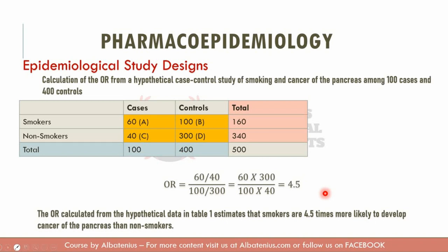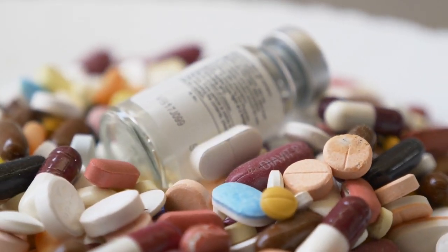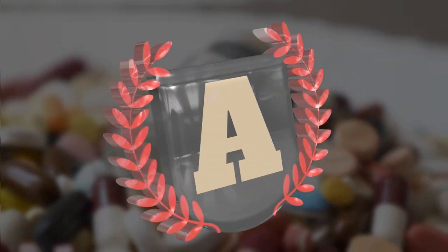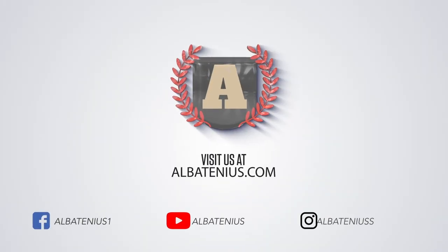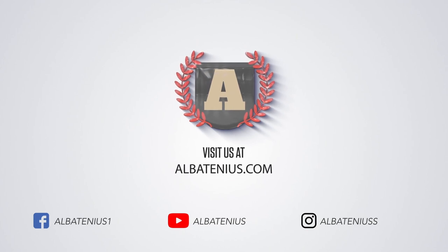In other terms, patients who have been exposed to smoking have higher chances of developing pancreatic cancer, or conversely, patients who have pancreatic cancer are more likely to have been exposed to smoking compared to patients who don't have pancreatic cancer.